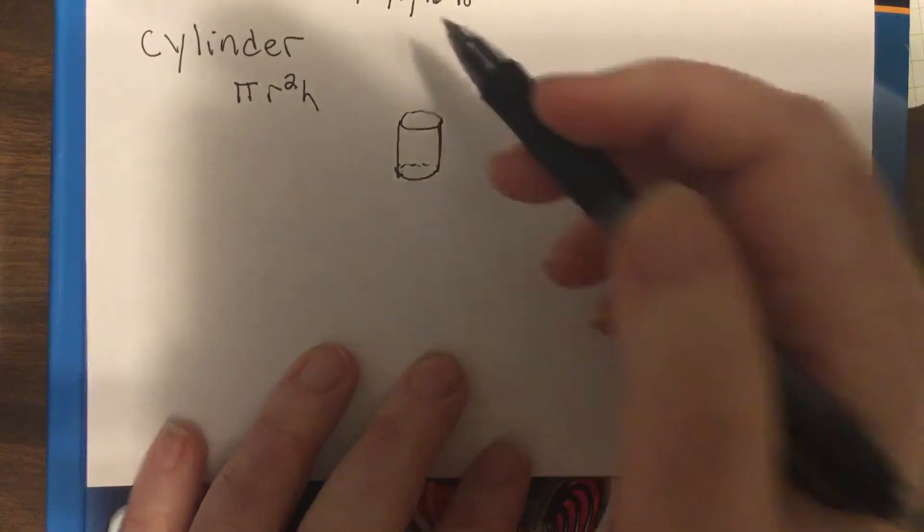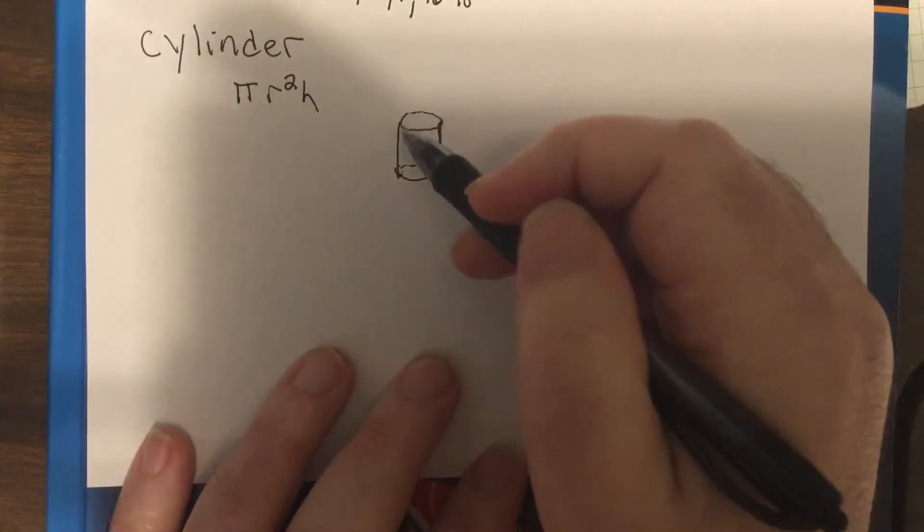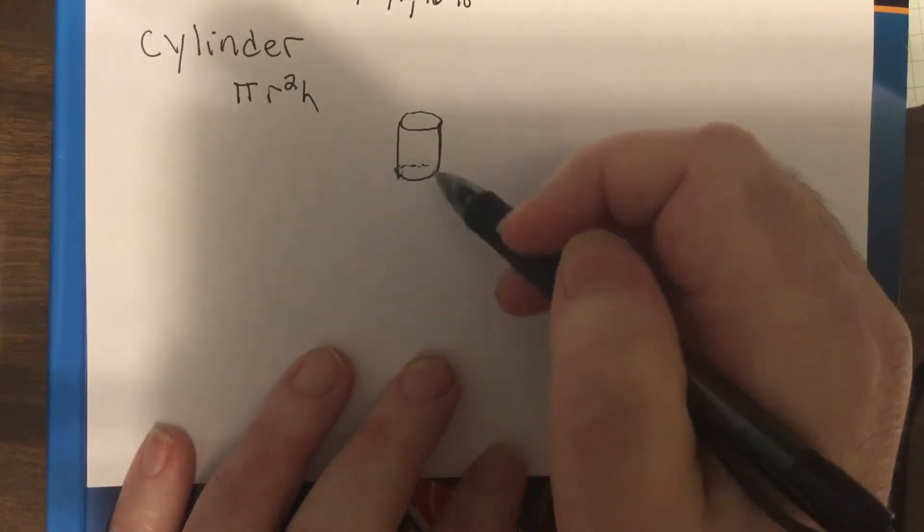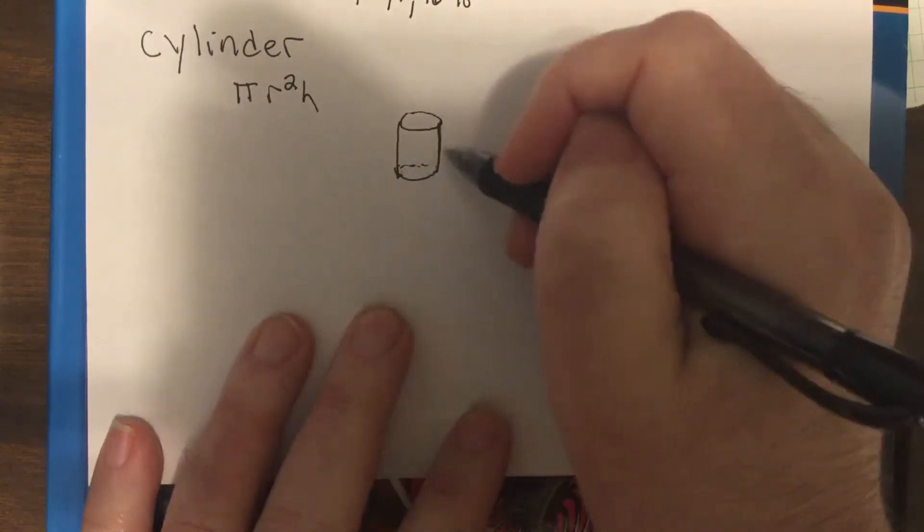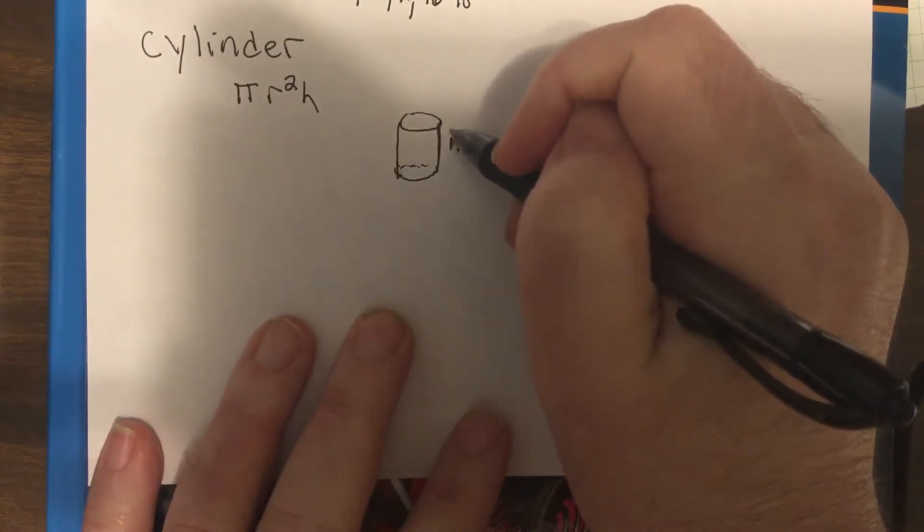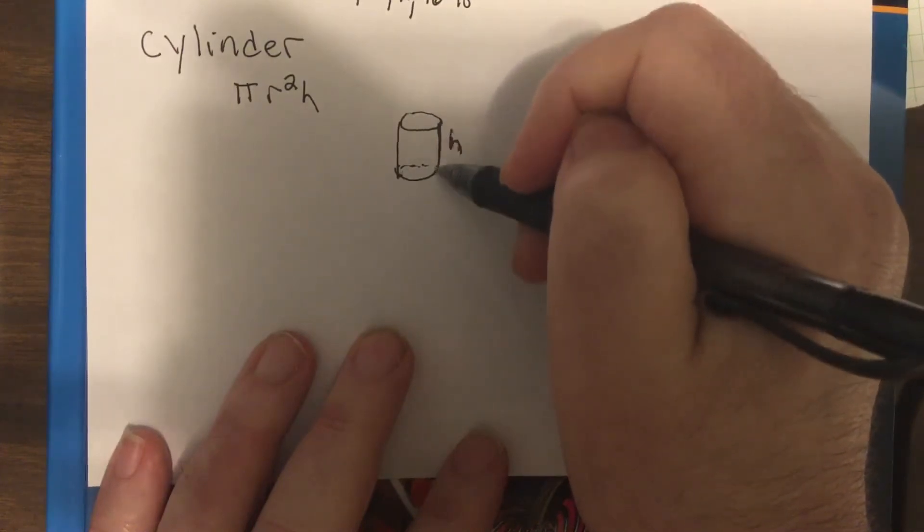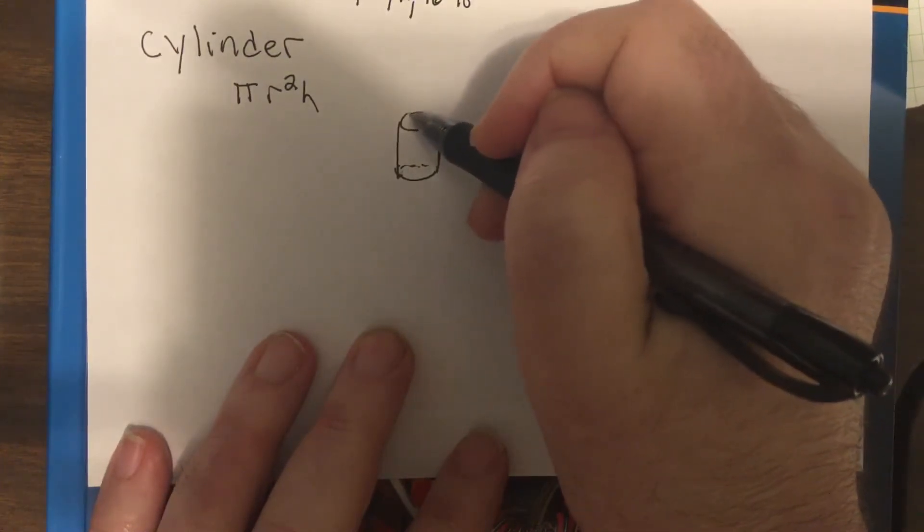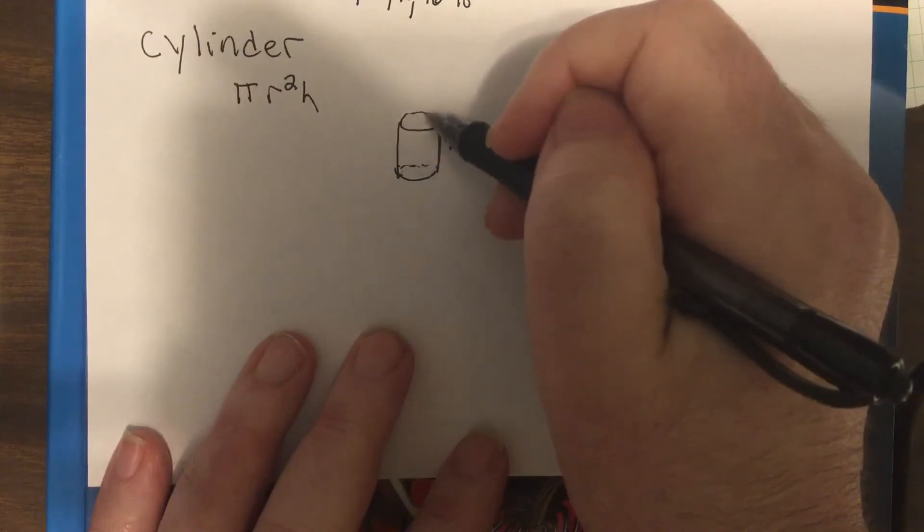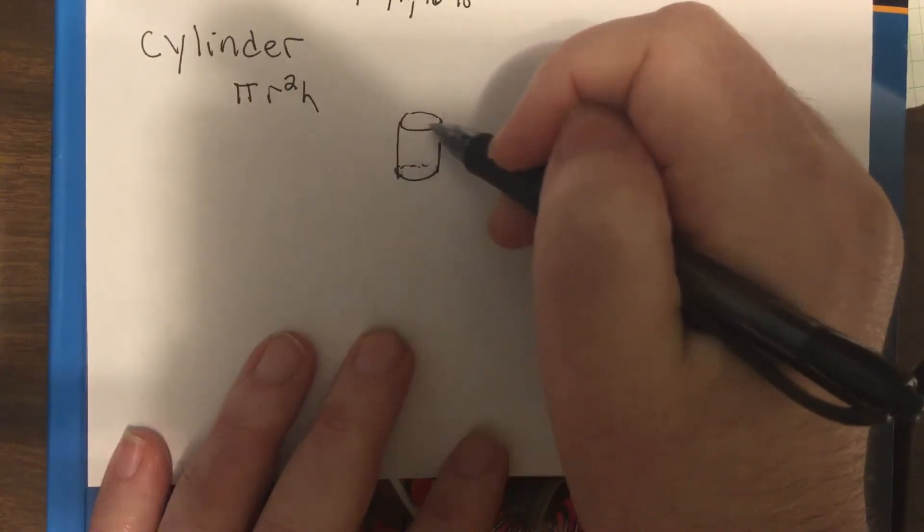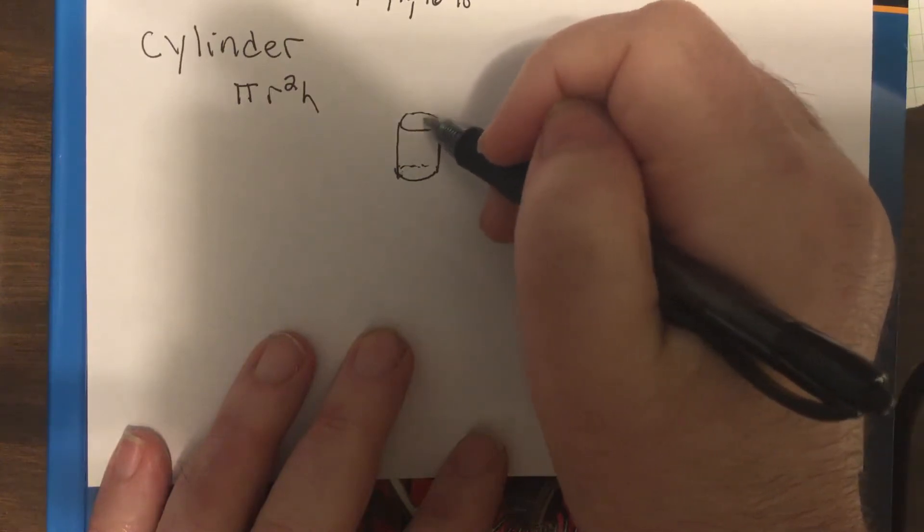Then a cylinder is like a battery or a waste paper basket, and you're asking how much can it fill. Well, you got to deal with the height, so that's up and down. Then how much space does the top take up? Well, a cylinder has a circle for a top, and what's the area of a circle? Pi r squared.